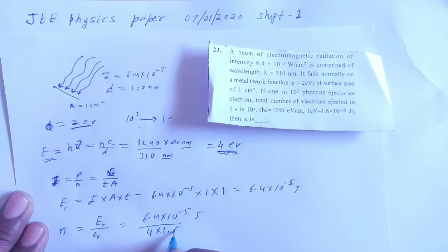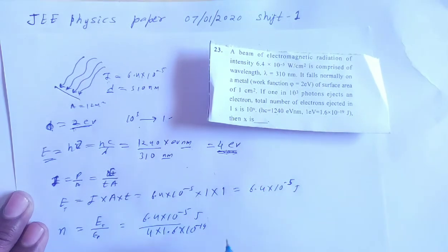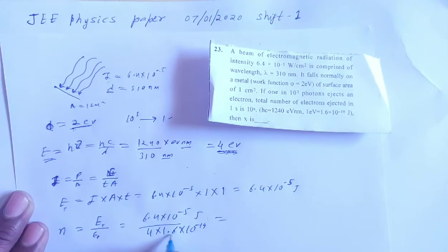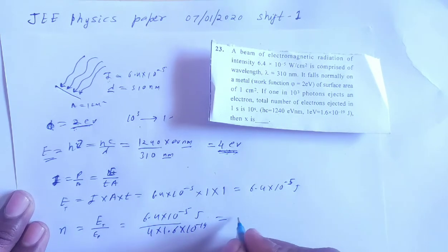Electron volt equals 1.6 × 10⁻¹⁹, this is already given. So 4 will be here, 6.4 will be divided by this.